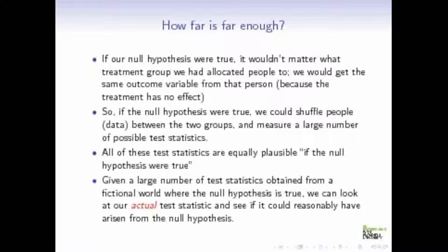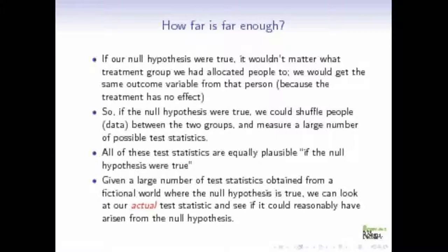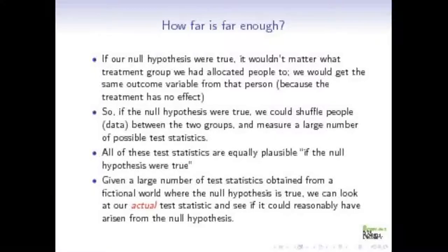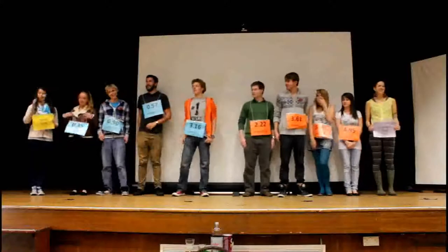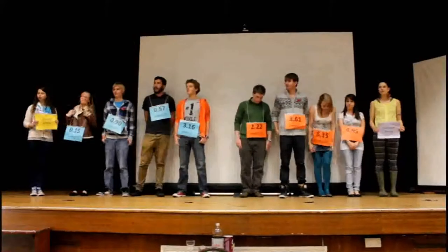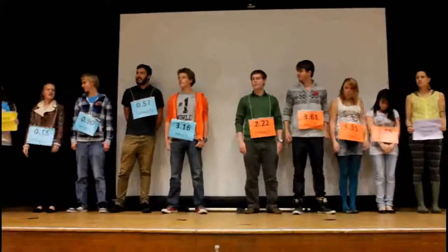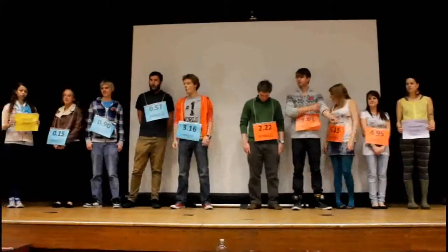If the null hypothesis were true, it wouldn't matter what group we allocated people to, because we'd get the same outcome. So if the null hypothesis is true, we can shuffle people between the two groups — everything we see is what we would have seen if the null hypothesis were true. Now let's look at observations about the data.